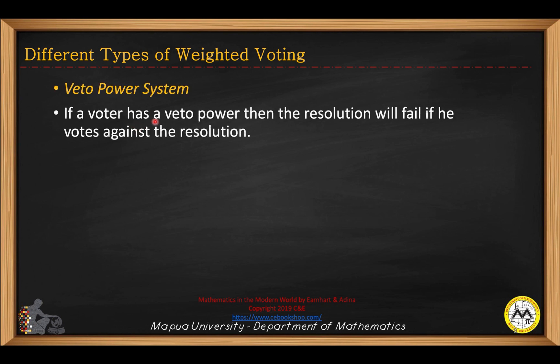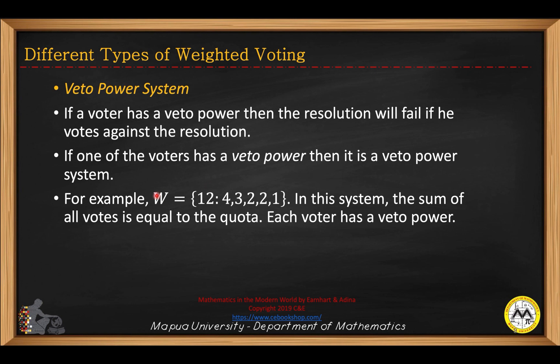A veto power system: if a voter has veto power, there is one voter that has veto power, then it is a veto power system. The resolution will fail if this voter votes against the resolution. So in this example, with quota 12 and weights 4, 3, 2, 2, 1, the total is 12 votes. So if one of these voters fails to vote, then no resolution will be passed. In this particular example, each voter has veto power.